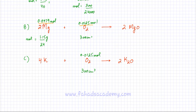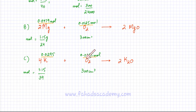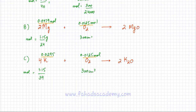For 1.15 grams of potassium, moles = 1.15 ÷ 39 ≈ 0.0295 moles. The equation requires a 4:1 ratio of potassium to oxygen, but 0.0125 moles of O₂ and 0.0295 moles of K do not satisfy that ratio. The data does not fit the equation, so option C, potassium, cannot be correct.